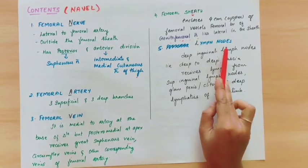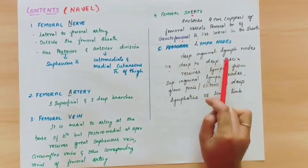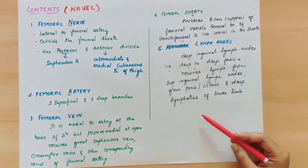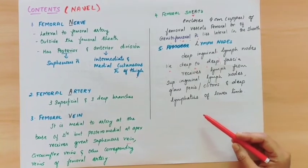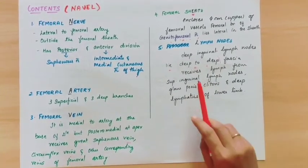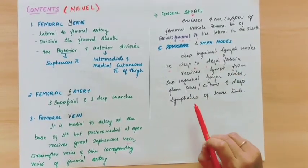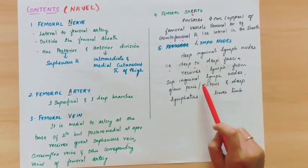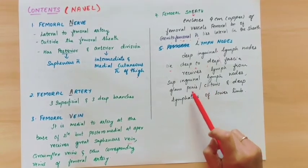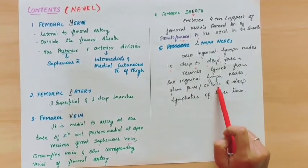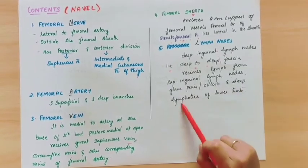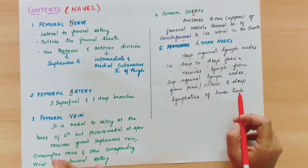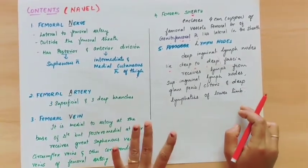The last structure is lymph nodes. Deep inguinal lymph nodes lie deep to the deep fascia. The deep inguinal lymph nodes receive lymph from the superficial inguinal lymph nodes, from the glans penis or clitoris, and from the deep lymphatics of the lower limb. This is all about the contents of the femoral triangle.